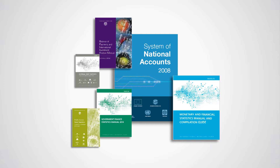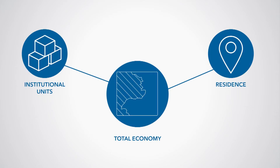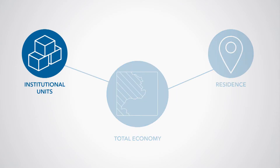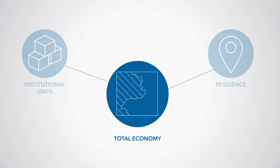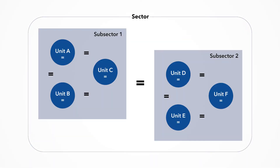However, these statistics are generally harmonized and so there are some basic cross-cutting principles that apply to all. Some of these common principles are institutional units and sectors. The total economy is always defined as the set of all resident institutional units, and all macroeconomic statistics adopt the main breakdown of the economy into sectors and subsectors.